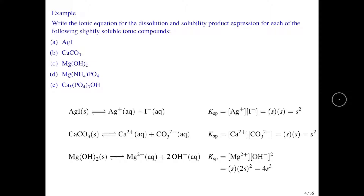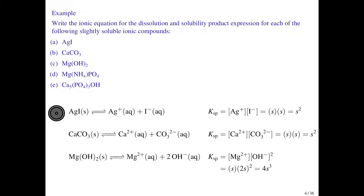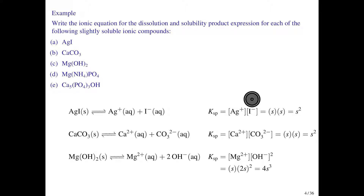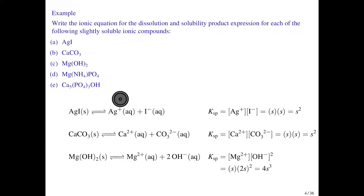In this example we're practicing writing out dissolution reactions and writing KSP expressions in terms of both ion concentrations and molar solubility. For silver iodide — a slightly soluble compound — it forms small amounts of silver ion and iodide in solution when it dissolves. The KSP is the product of the silver concentration times the iodide concentration, one-to-one stoichiometry. If s moles per liter dissolve, then both [Ag⁺] and [I⁻] equal s, so KSP = s².